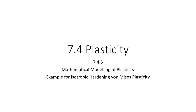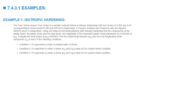In this video, we are going to present an example that illustrates the predictions of the von Mises isotropic hardening plasticity model under different loading conditions. For simplicity, we are assuming that the material follows a bilinear relationship with true stresses of 400 and 550 MPa corresponding to a total strain of 0.002 and 0.25.